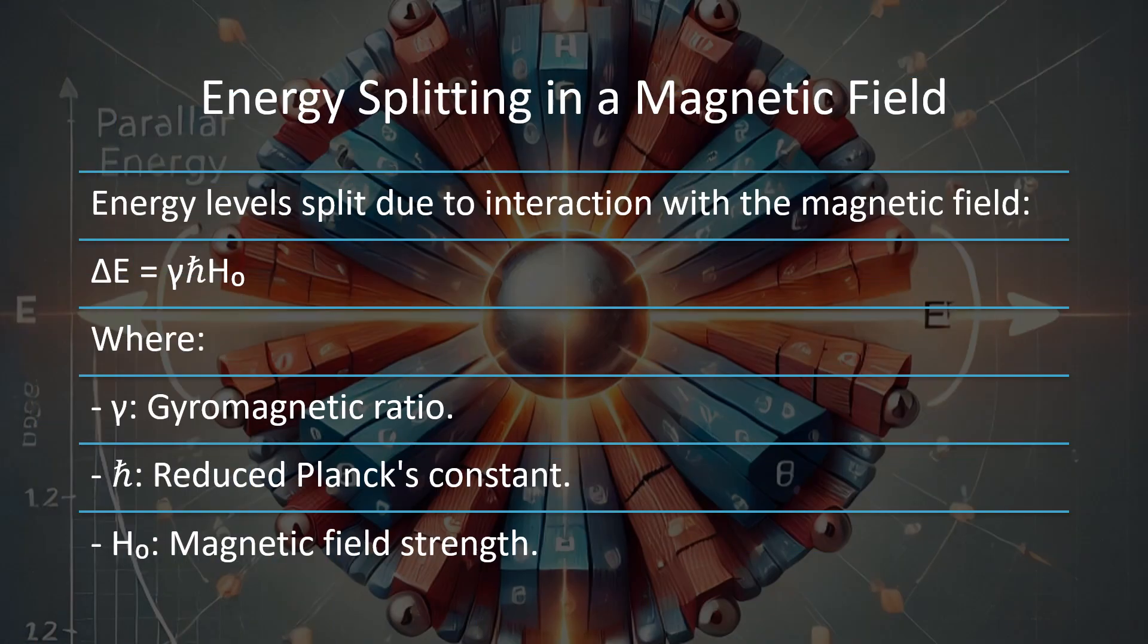When nuclear magnets are placed in a magnetic field, their energy levels split. This phenomenon is called Zeeman splitting. The energy difference between these levels depends on the strength of the magnetic field and the nucleus's magnetic moment. This splitting is what allows us to detect and analyze nuclei using NMR spectroscopy. The greater the field strength, the larger the splitting, making the signals easier to detect.